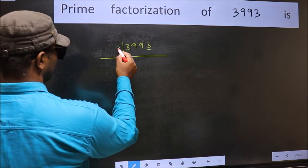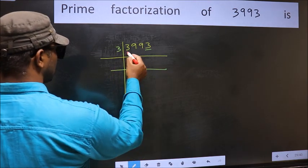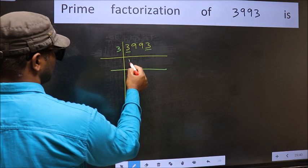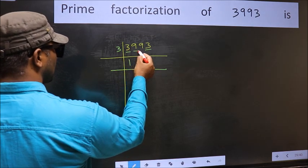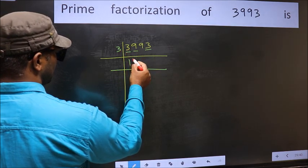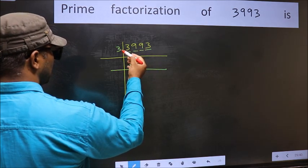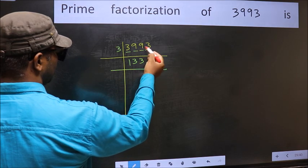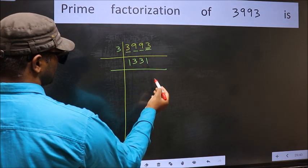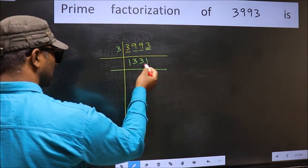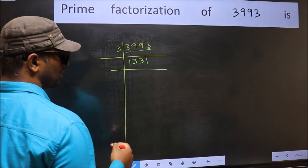So take 3 here. First number 3, 3 once is 3. The next number 9, 3 threes is 9. The next number 9, 3 threes is 9. The last number 3, 3 once is 3. We get 1331. Now to check whether it is divisible by 3 or not.